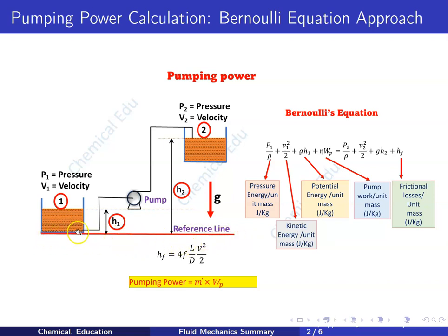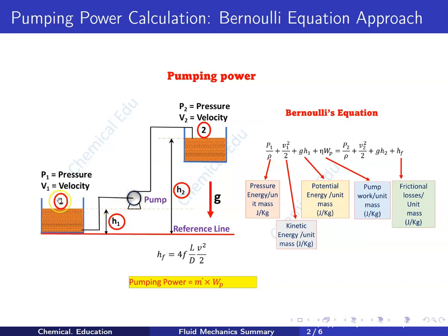If I take a reference line — shown as the red line — the height from this reference line to the water surface of reservoir one is h1, and from the reference line to the water surface of reservoir two is h2. Gravity acts in the downward direction, and both reservoirs are open to the atmosphere.